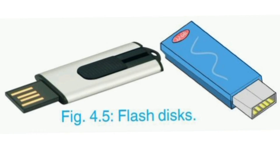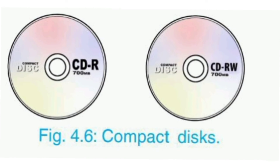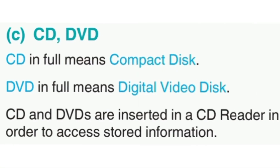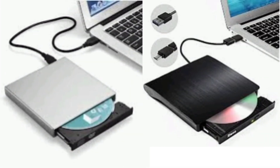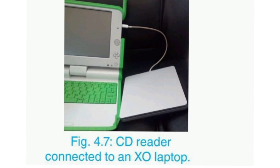In addition, let's describe CD and DVD. CD in full means Compact Disk, while DVD in full means Digital Video Disk. CDs and DVDs are inserted in the CD reader in order to access stored information. Look at these pictures representing CDs and DVDs. The CD reader is connected to the XO laptop, and it is where the CD or DVD is inserted so that you can access the information on it.